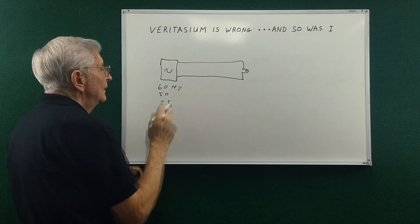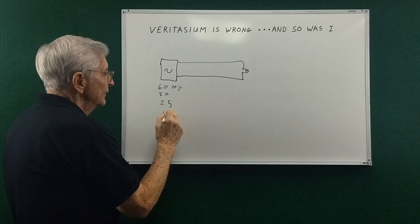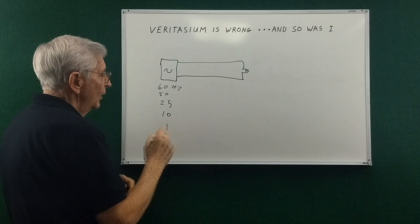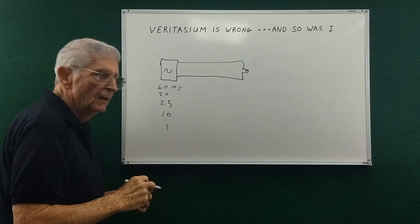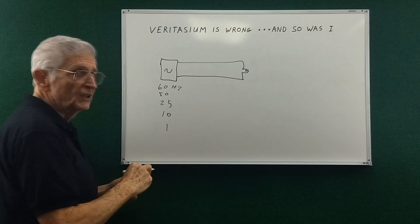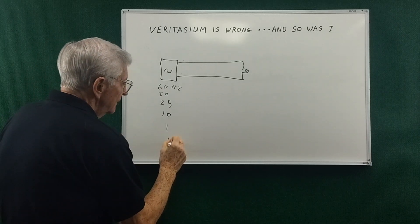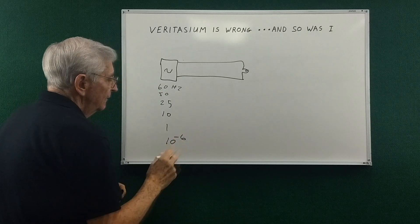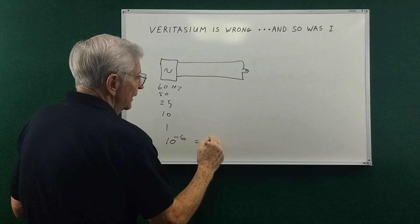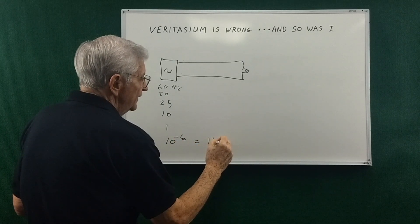what if we keep going down in frequency? 10 Hertz, 1 Hertz. What about a millionth of a Hertz? That's a period of about 11 and a half days.